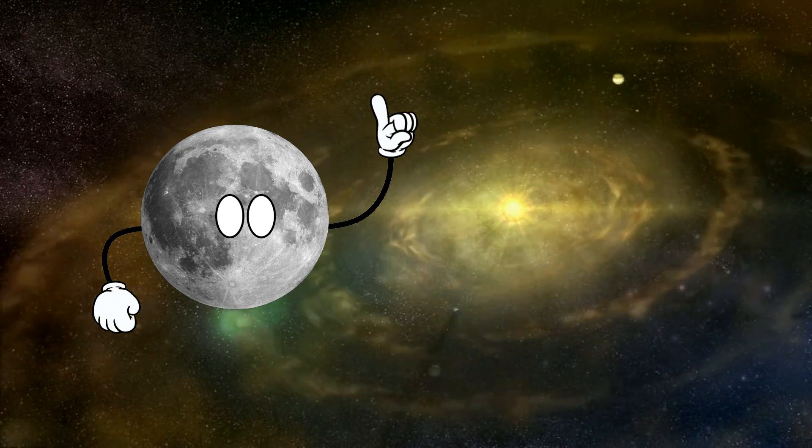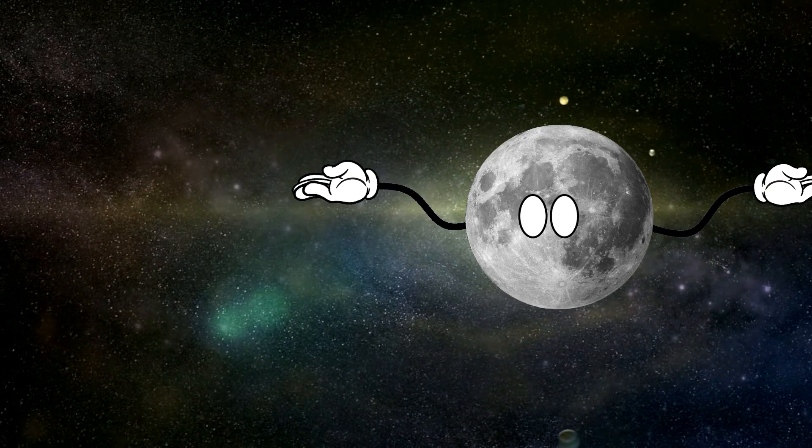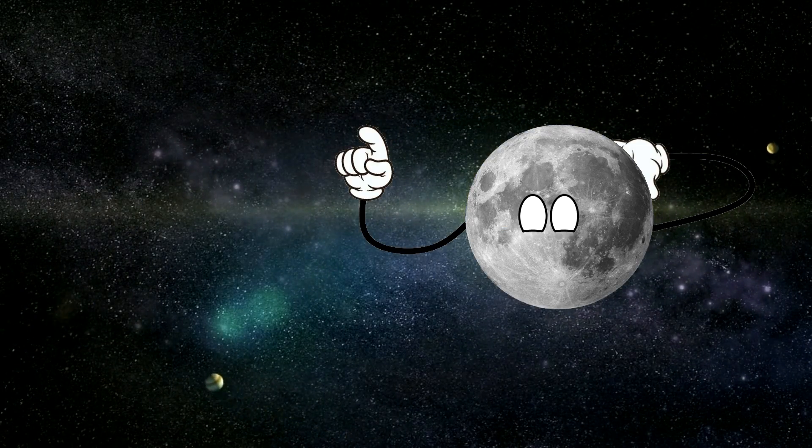So if Mercury formed from accretion, then why didn't a moon accrete around Mercury as it was being formed? Well, there wasn't really any material for a moon to accrete from.